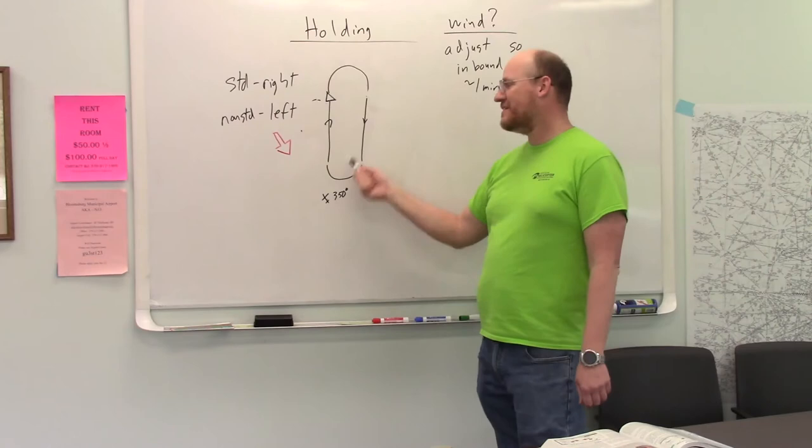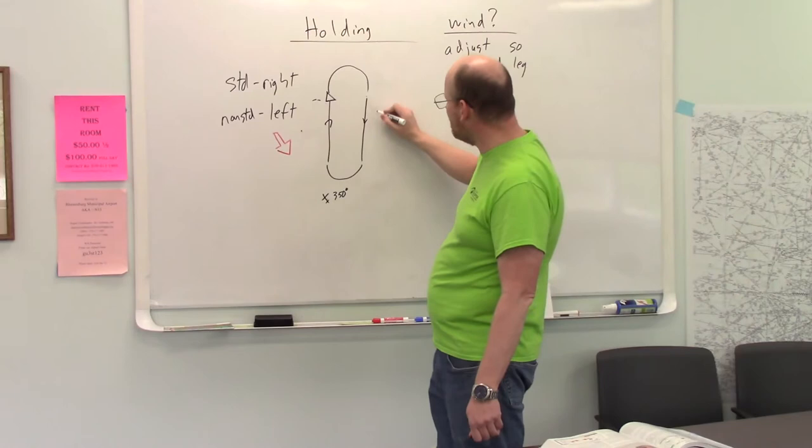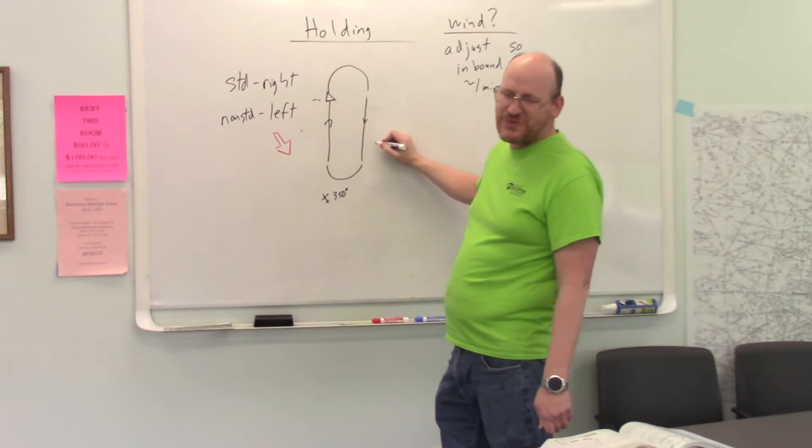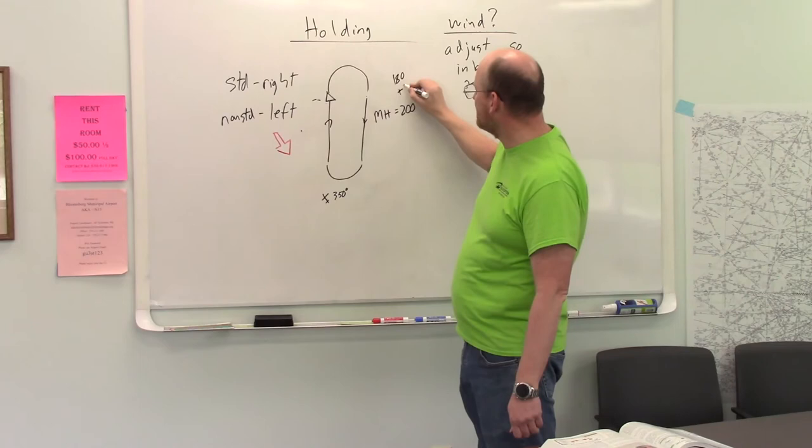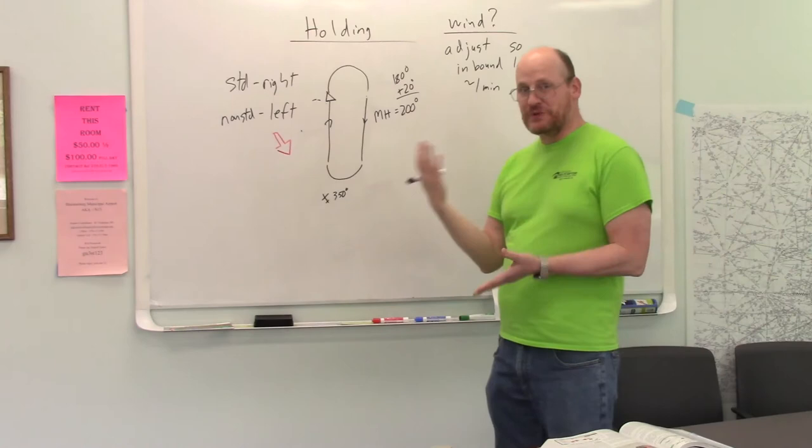So this one was 10 degrees to the left. So I'm going to take this one and make it 10 degrees to the right. So my outbound leg heading, instead of being 180, I'm going to go right 180 by 20 degrees. So my heading here is going to be 200, which is 180 plus 20. That's why I got 200.